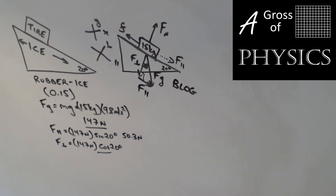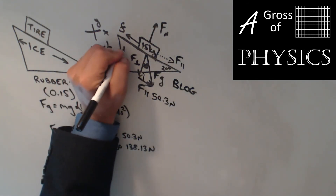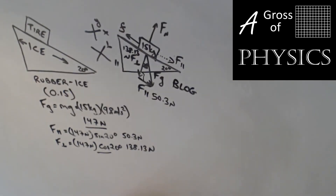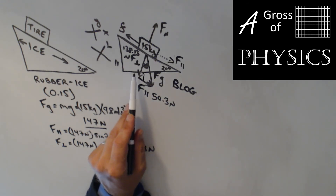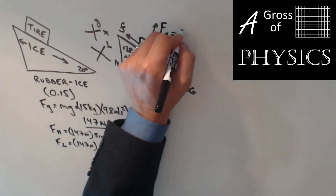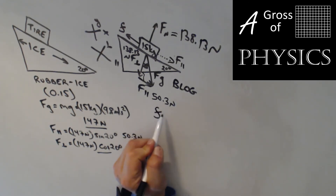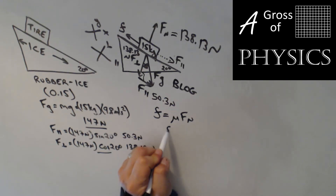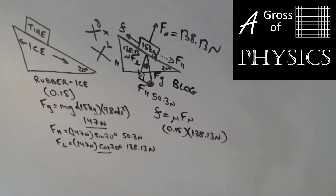The parallel component of 50.3 newtons pulls the tire down the incline. The perpendicular component of 138.13 newtons is equal and opposite to the normal force, so the normal force equals 138.13 newtons. Now we can find friction: mu times Fn equals 0.15 times 138.13 newtons, which gives 20.72 newtons opposing the motion up the incline.